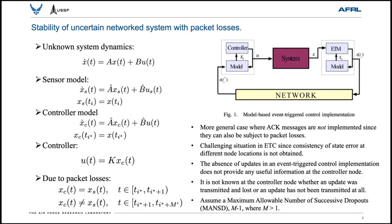Notice that the sensor model is updated every time instance. However, the controller model is updated only at the receiving time instances, only when a message is not lost and is received at the controller node. The state of a sensor model is used to validate events, and the state of a controller model is used to compute a control input. We consider the more general case where ACK messages are not implemented since they can also be subject to packet losses. This is a difficult situation to analyze in event-triggered control systems.